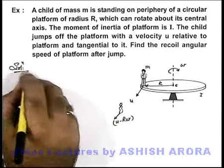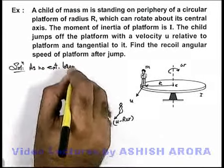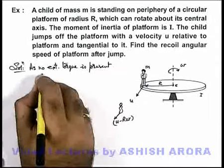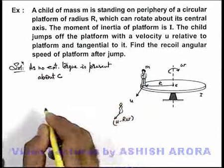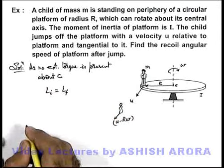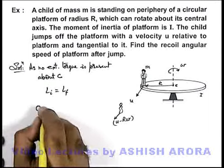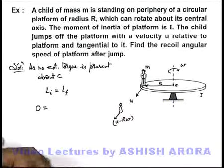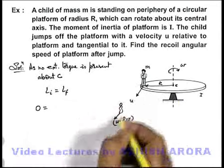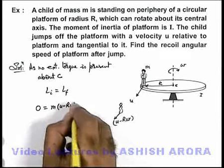Since no external torque is present about C, the center of the platform, its initial and final angular momentum must remain conserved. The initial angular momentum was zero. This equals the final angular momentum: the boy's contribution is m times (u minus R omega) times R in the anticlockwise direction.